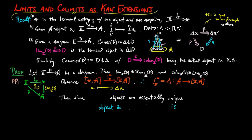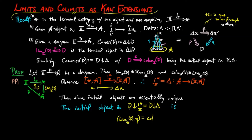Then for the co-limit case, since initial objects are essentially unique, the initial object in d over shriek_I^*, which is equal to d over delta, is the left Kan extension of d along shriek_I, which must also be the co-limit co-cone of d.